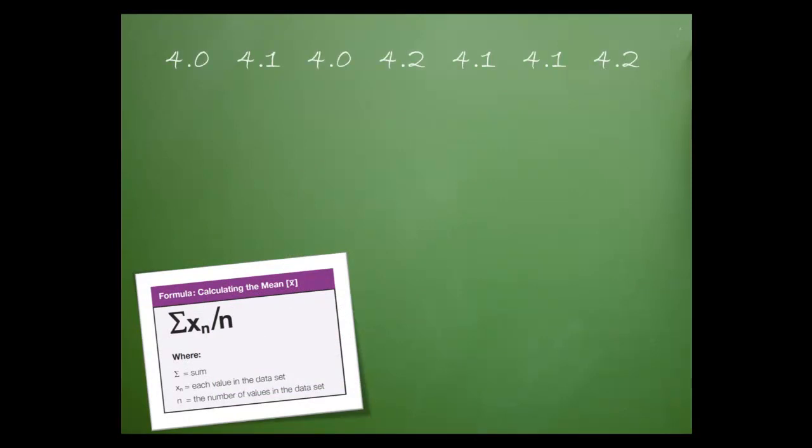These are the values that make up our data set. Again, we'll add up all the points and then divide by the number of points in the data set. The sum of the values is 28.7. Finally, we divide by the number of values in the data set, which is 7. The mean is 4.1.